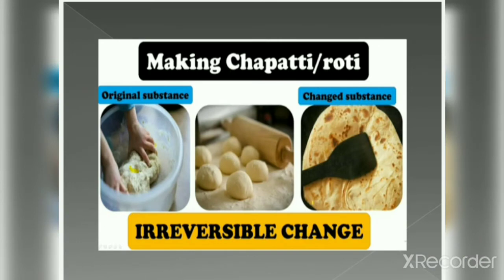Now, we made chapatis out of dough. I want to get back the dough — can I get it back? I have already made the chapatis and now I want the dough back in its original state. Obviously no. So this is an irreversible change — you cannot get back the original substance.